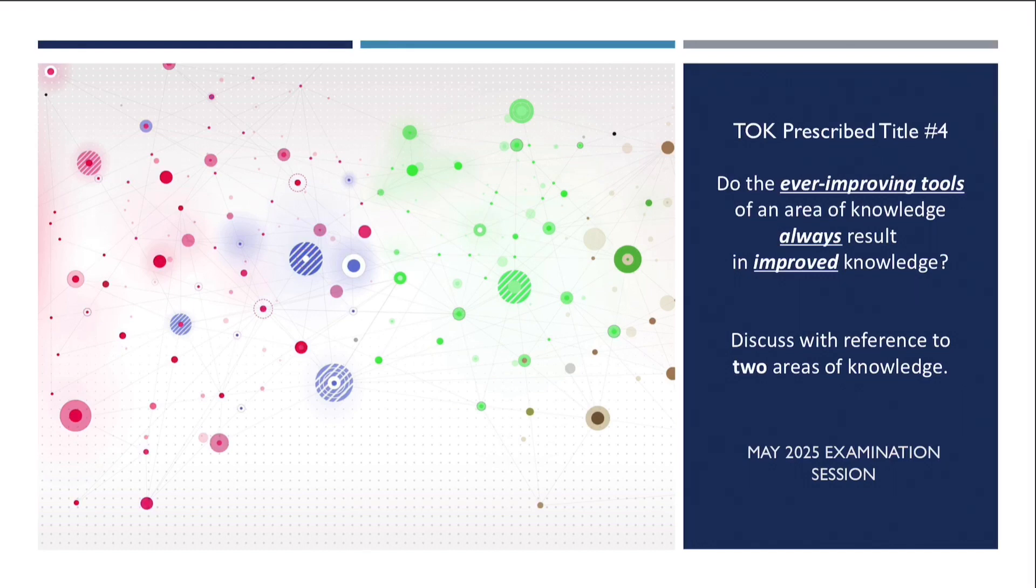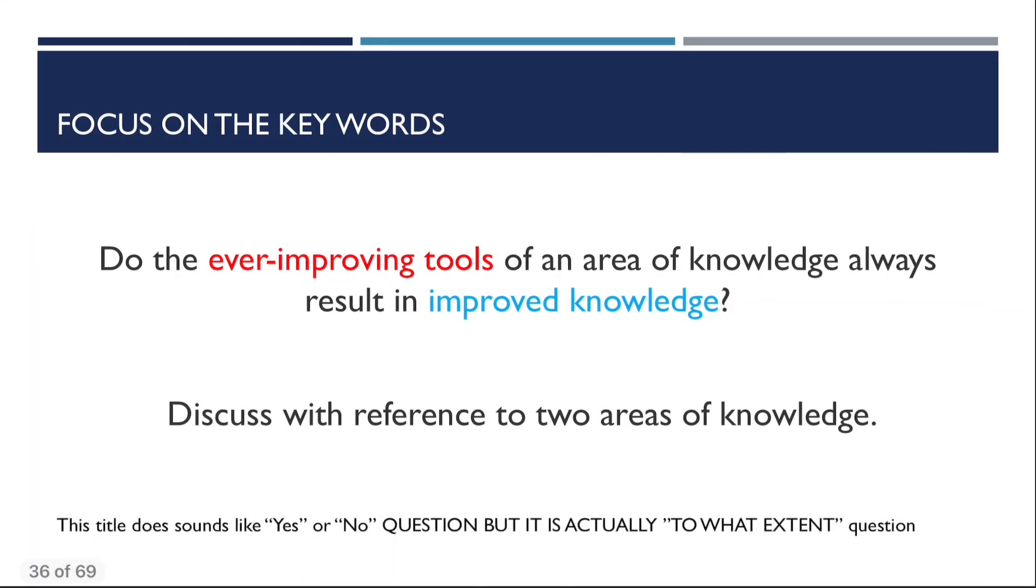In this video, we're going to discuss the TOK Prescribed Title Number 4 for May 2025 examination session: Do the ever-improving tools of an area of knowledge always result in improved knowledge? Discuss with reference to two areas of knowledge. This topic is actually very interesting and it is very easy to approach. With this prompt, there are two key points that you need to focus on during the developing process. They are ever-improving and improved knowledge.